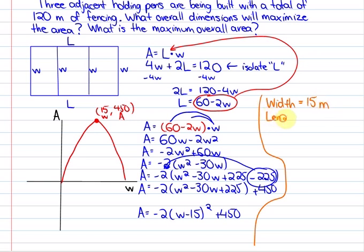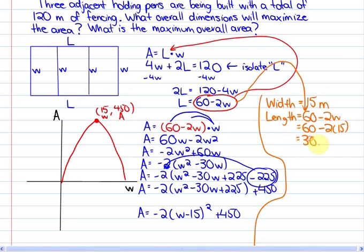In order to discover the length, we're going to use this expression here and substitute the width. So we have 60 minus 2 widths. The length will be 60 minus 2 times 15, which will get us a length of 30 meters.